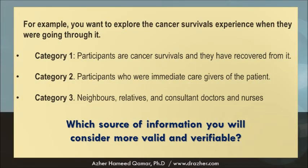Let us take another example. To explore the cancer survival experience, you may consider seeking information from three types of participants. First, participants who are cancer survivors and have recovered from it. Second, participants who were immediate caregivers of the patient. And third, neighbors, relatives, the consultant doctor, and nurses. The first category will be your key participants, while the second and third are other participants. The immediate caregivers, who were with the patient throughout recovery, can provide valuable insider information, and the third category may also be a useful source even as outsiders.